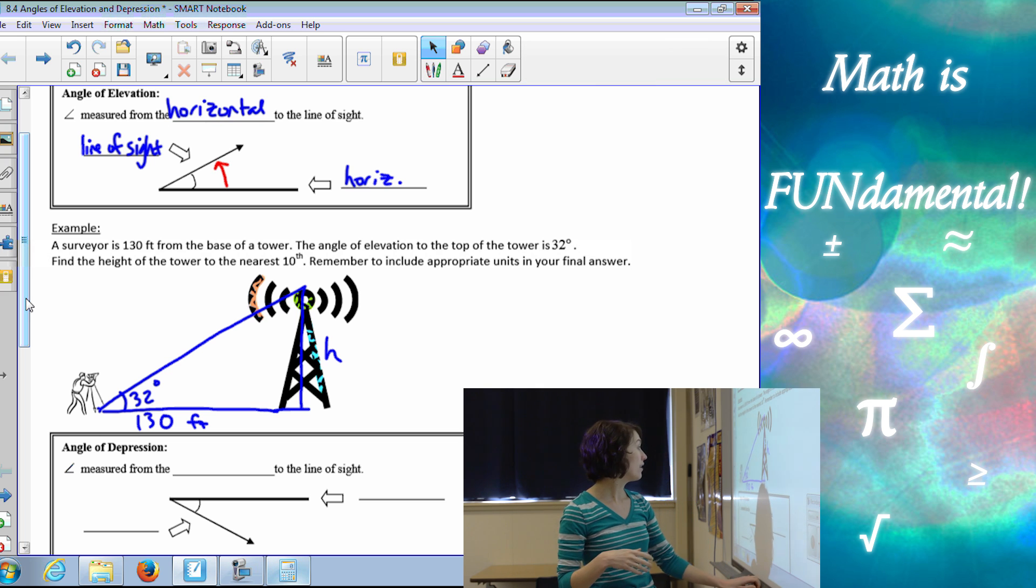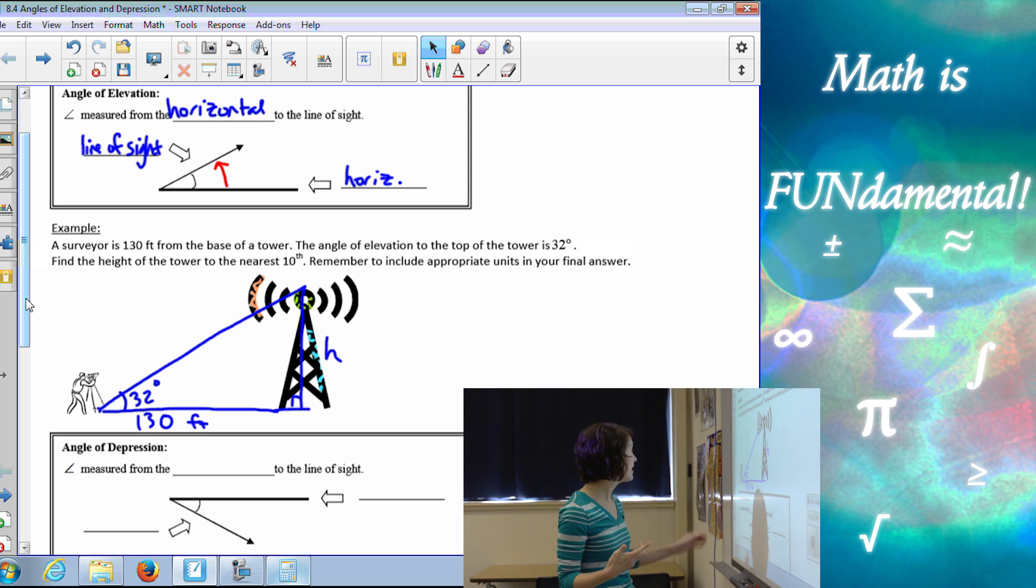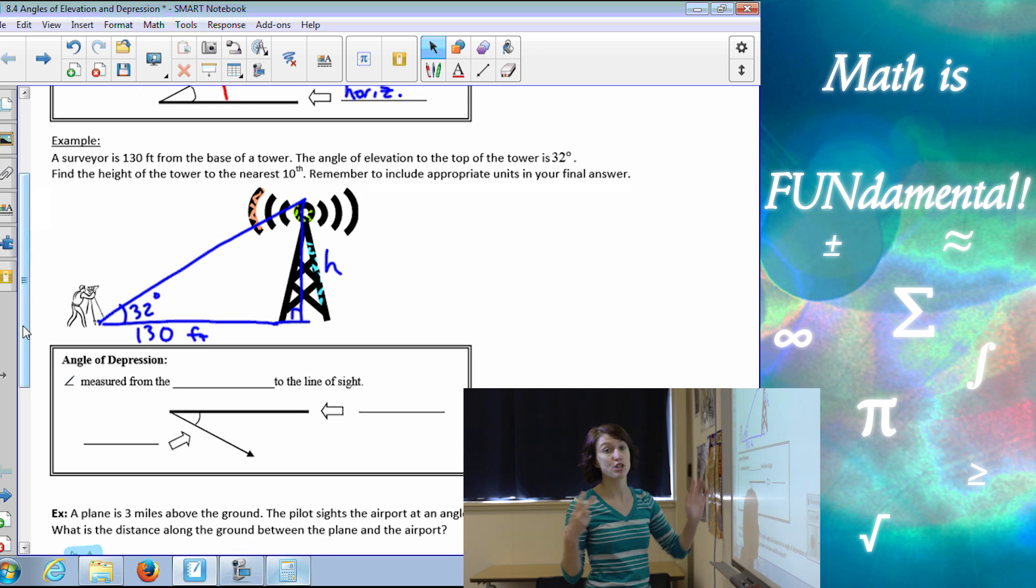So again, we want to think about all the different ways we know to solve for a right triangle. So we have Pythagorean theorem, but in this case it doesn't work because I have to have two sides given to me to find the third. We have our special right triangles, our 30-60-90, 45-45-90. Since this is 32 degrees, that doesn't work either.